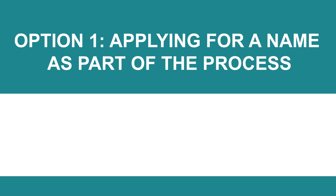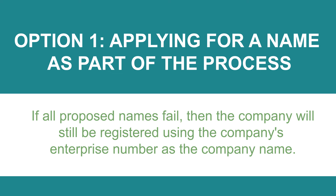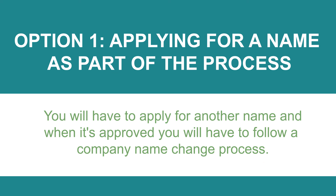Option one — applying for a name as part of the process: click on this option if you want to apply for a name as part of the process. The company will only be added to the company registration queue after the proposed name has been approved. If all proposed names fail, the company will still be registered using the company's enterprise number as the name. You will then have to apply for another name and follow a company name change process.